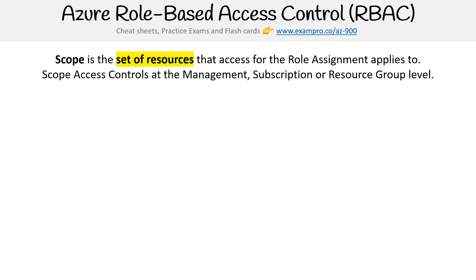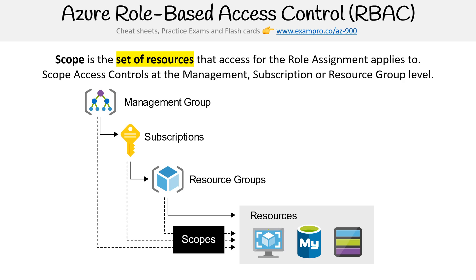The last component here is scope. This is the set of resources that the role assignment is going to be granted access to. Scope access controls at the management, subscription, or resource group level. The idea is that you have resources down below that you want to gain access to, but you can set scope at the management group level, at the subscriptions level, or at the resource groups level. A management group is when you're managing a bunch of accounts, a subscription is an individual account, and resource groups is a grouping of resources. You can choose any one of those three.